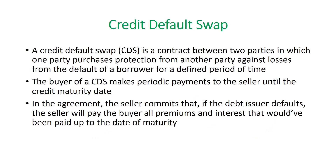Next is the credit default swap. In a credit default swap, an investor who has invested money to buy a company's bonds or debentures receives coupon or interest from that debt. Suppose after two or three years the company that issued the bonds or debentures defaults — that would be a loss for the investor.